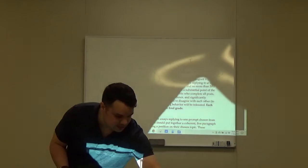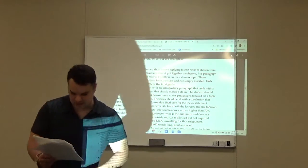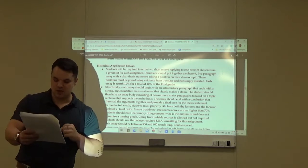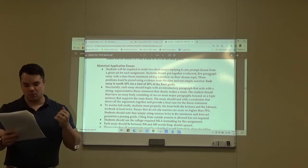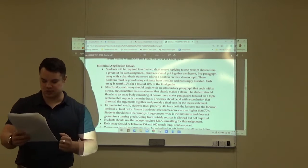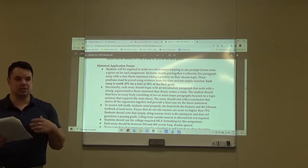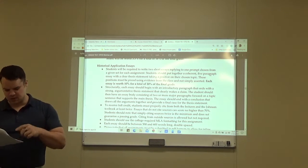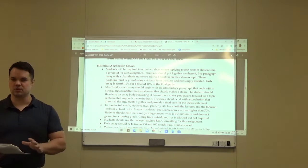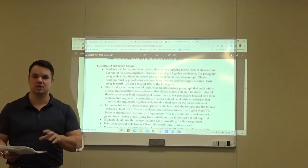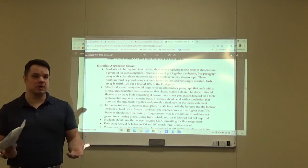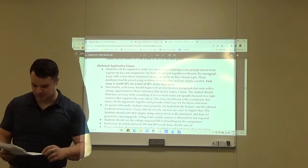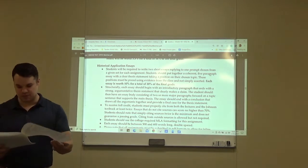Historical application essays. This is where we have to get some of the meat of the work. Okay. Students will be required to write two short essays applying to one prompt chosen from a given set for each assignment. Students should put together a coherent five-paragraph essay with a clear thesis taking a position on their chosen topic. The positions must be proven using evidence from the class and not simply assumed. So you're going to have to show me you did the reading and what you're talking about. You've actually got some evidence from the textbook. Each essay scored 10% for a total of 20% of the final grade.